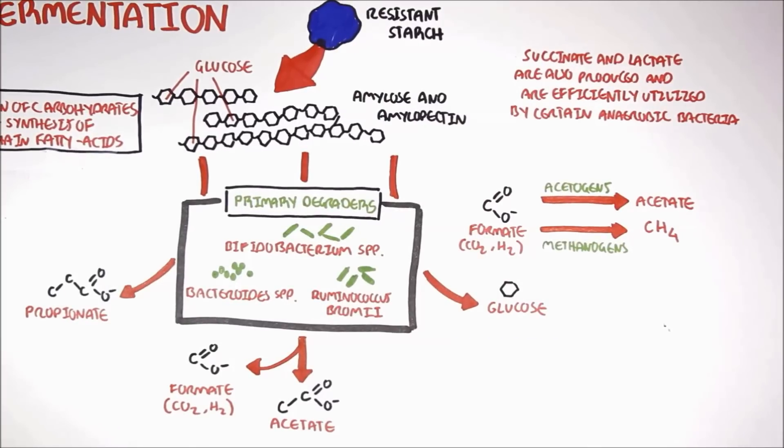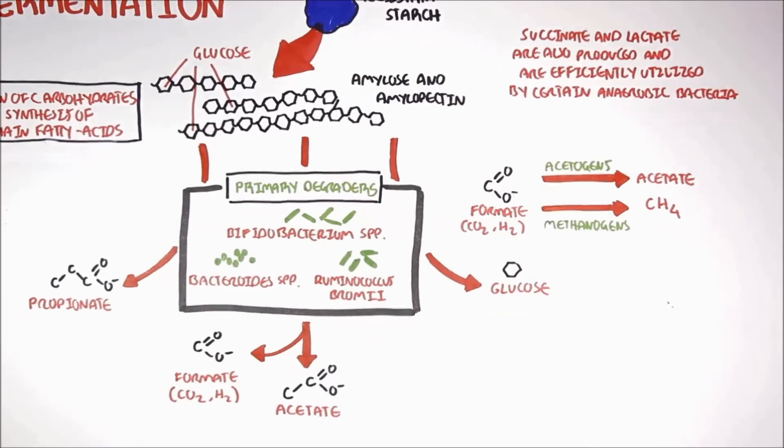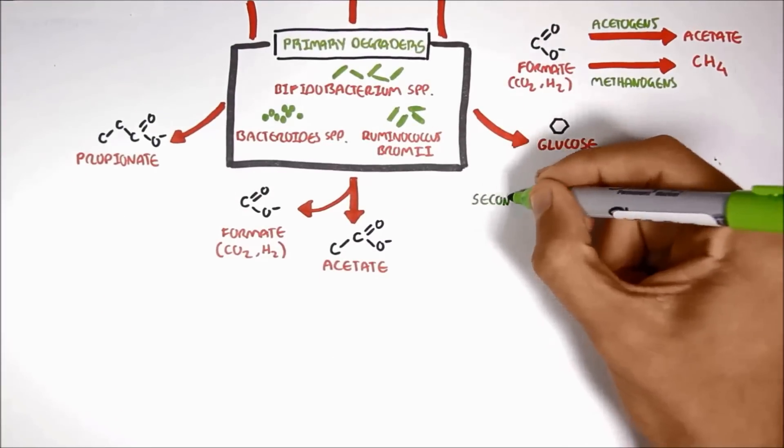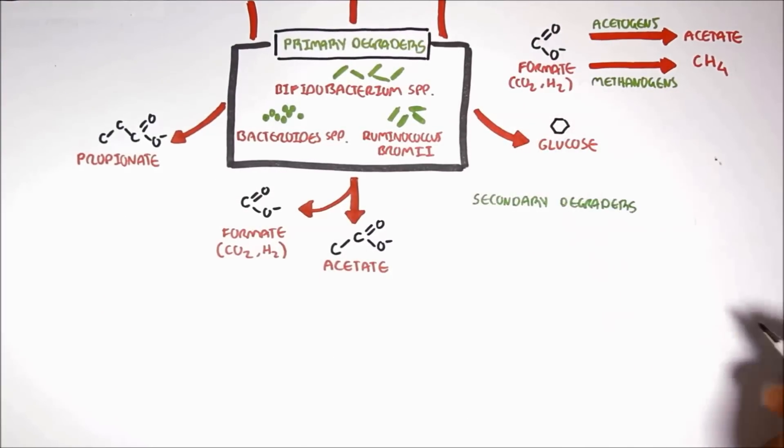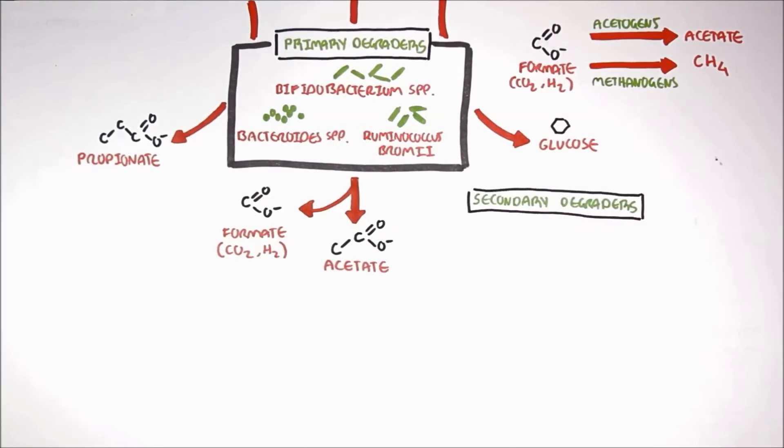Now back to the degraders, there are another set of bacteria called the secondary degraders that also contribute to the fermentation of resistant starch. However, the secondary degraders are considered to have no enzymes that initiate the cleavage of glucose from the glucose polymers that make up resistant starch.